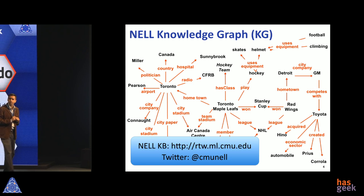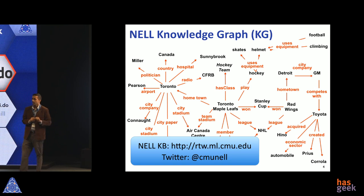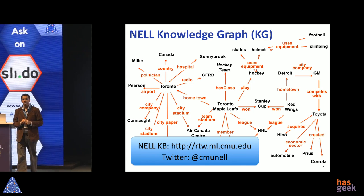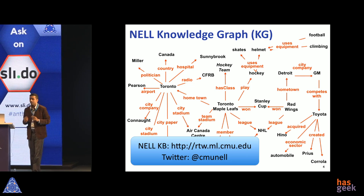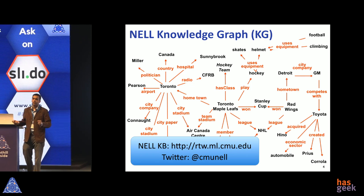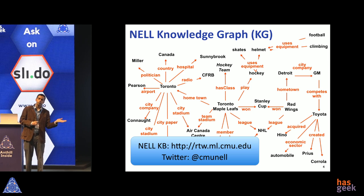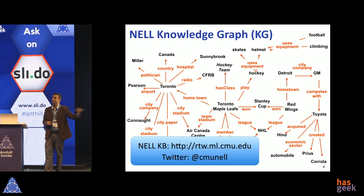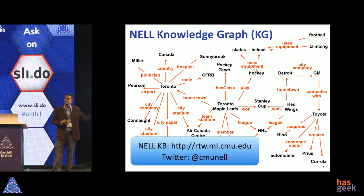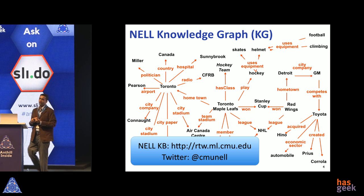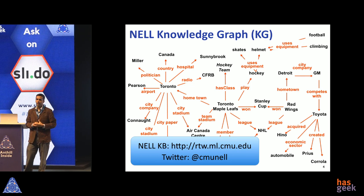Those of you on Twitter can follow NELL at the handle CMUNEL. There are a few thousand followers — we hope most of them are humans, but on Twitter you don't always know. NELL tweets things from time to time that it thinks are interesting — facts, edges, and beliefs. Those followers give feedback, both positive and negative. There's a very interesting open question here: how do you exploit this communication between an AI agent and its human followers to improve the AI agent's performance itself?